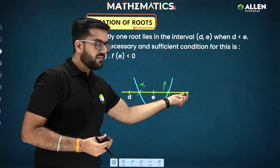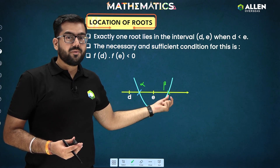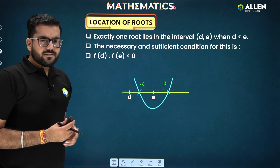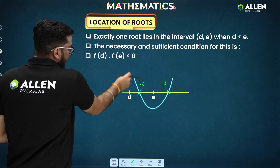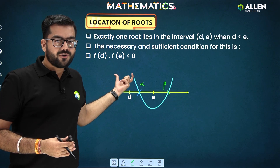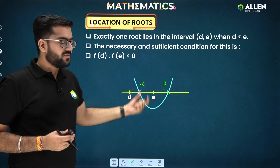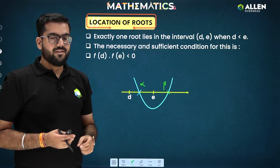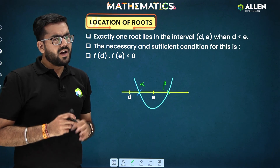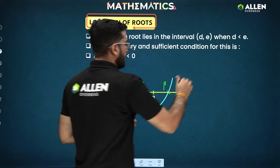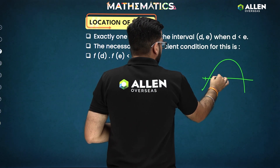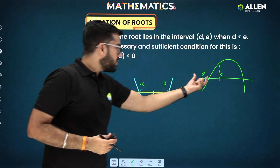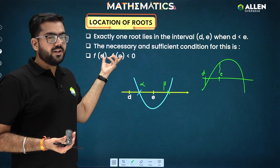You can also write d here and e there; the condition is simply that one root lies between d and e. At d we get a positive value and at e we get a negative value, so the product f(d)·f(e) is negative — less than zero. For a downward parabola, at d we get negative and at e positive, so the product is still negative. There are no changes in the final conclusion.